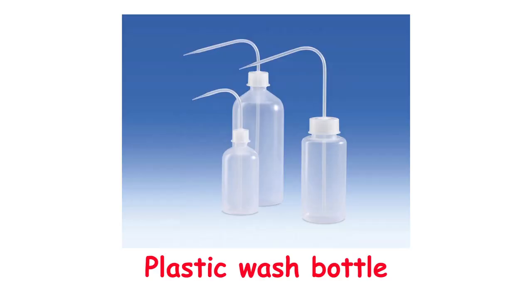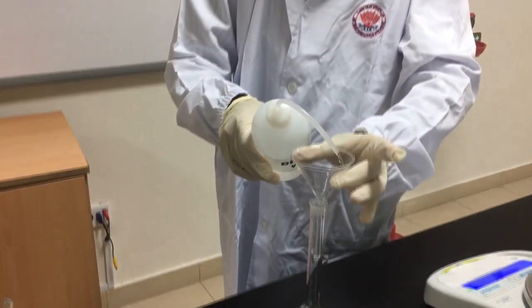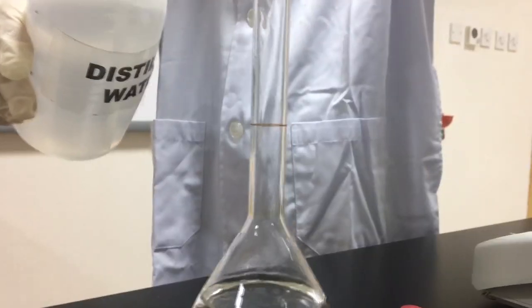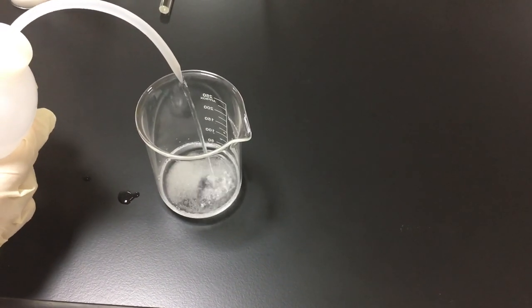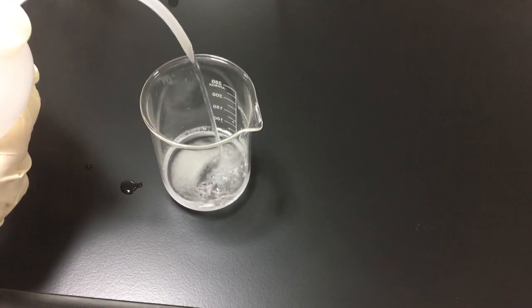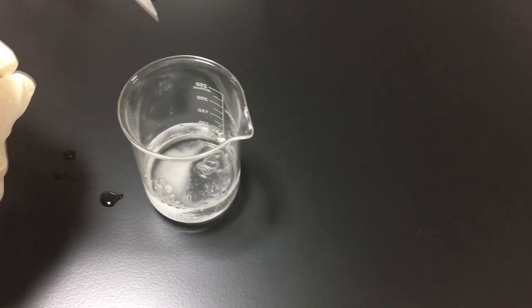A plastic wash bottle is mainly used for rinsing glassware and for dispensing small amounts of distilled water. It is mainly used when adding water for dissolving or for chemical reactions.